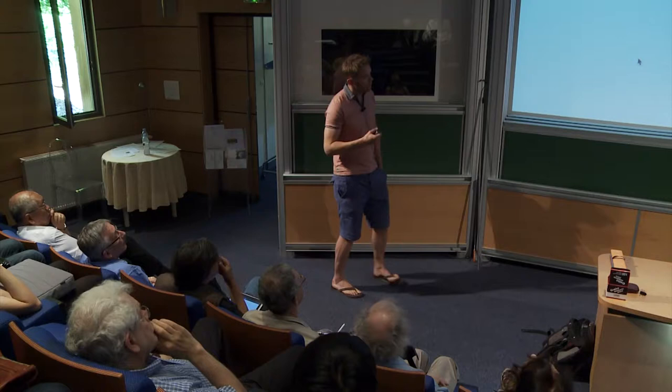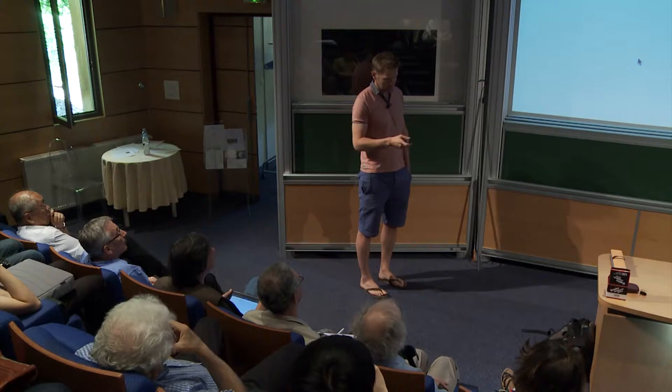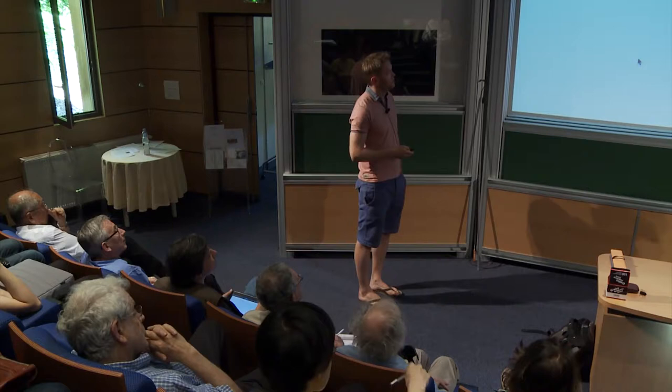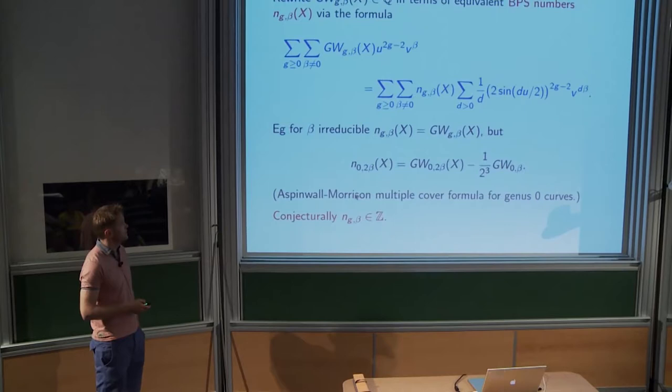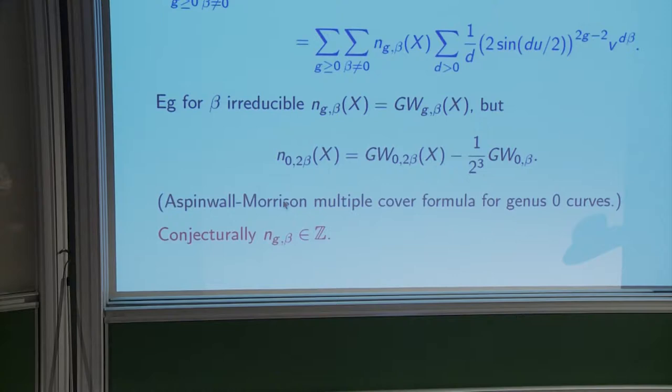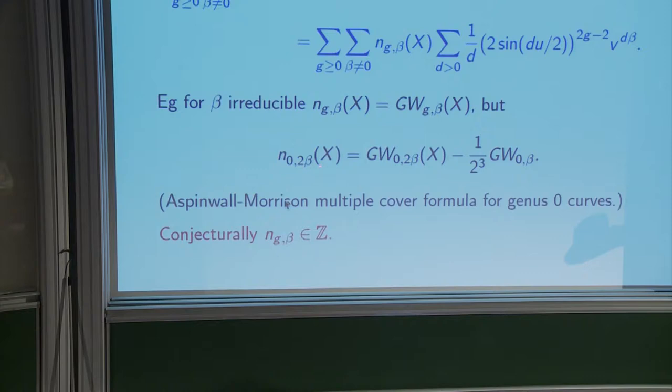There are other approaches: Ionel-Parker have some integers, and stable pairs — which we'll talk about later — are integers. It's clear that underlying Gromov-Witten invariants there are some integers, but some things are proved and some are not. You're just supposed to understand the philosophy: underlying these rational numbers are some integers. For instance in an irreducible class, to leading order the BPS numbers are the Gromov-Witten invariants, with no room for multiple covers or degenerate contributions.